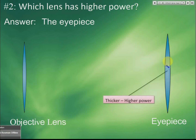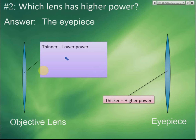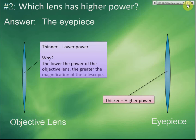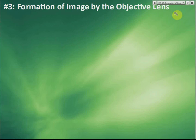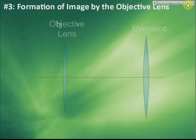The eyepiece is thicker with higher power; the objective lens is thinner with lower power. Why? Because for a telescope, the lower the power of the objective lens, the greater the magnification — lower power gives a bigger image.